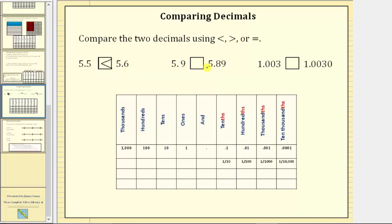Next we want to compare 5.9 and 5.89. Let's place both decimals in the place value chart and compare the place values from left to right. Again, both decimals have a 5 in the ones place value. However, in the tenths place value, 5.9 has a 9 and 5.89 has an 8.